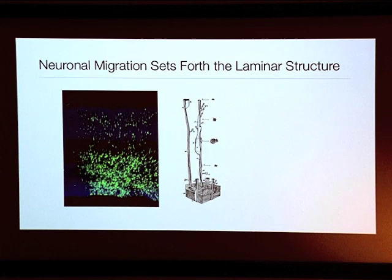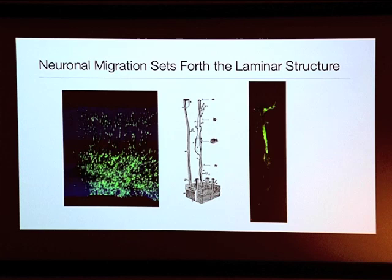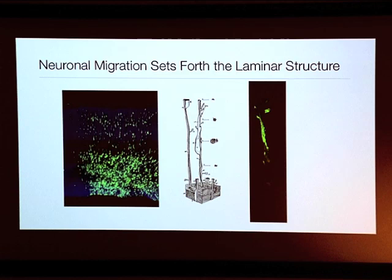Our laboratory was actually the first to use microscopy to prove that this was a dynamic process, and you can see the cell actually migrating along. This is a very delicate and important process that begins between the fifth and ninth months in the womb. It's a process that depends a great deal on the health of the mother, as things like alcohol, cocaine, radiation, and all sorts of environmental insults will kill migrating cells and cause various brain abnormalities.